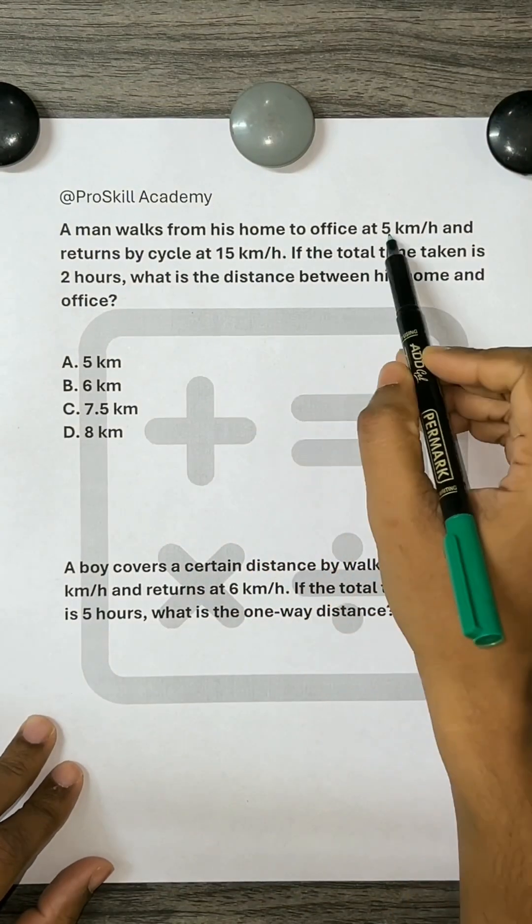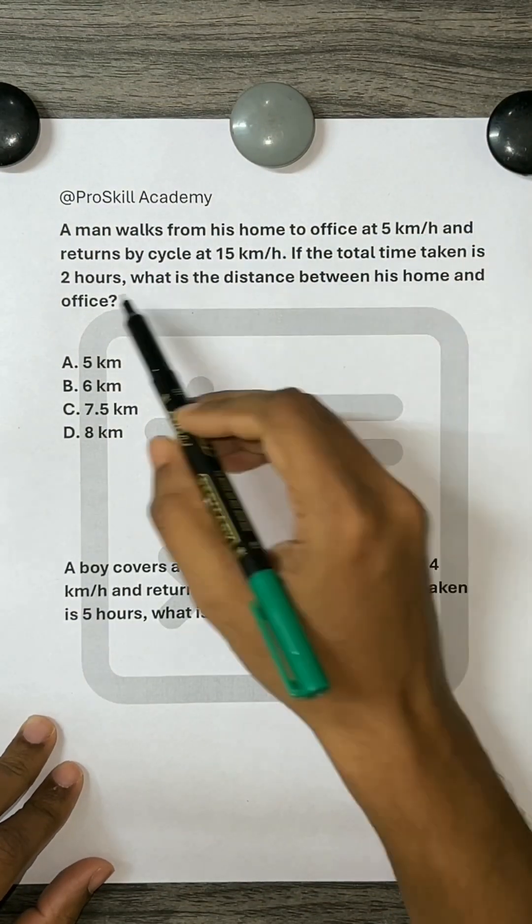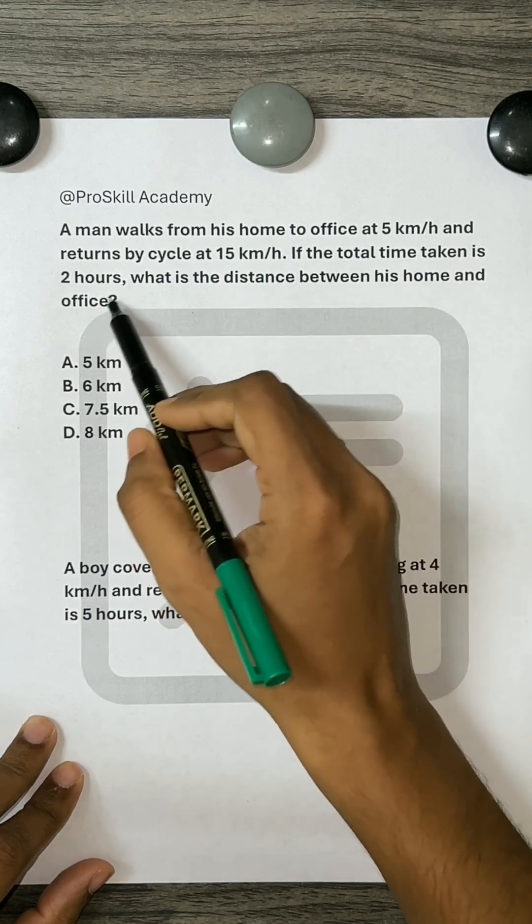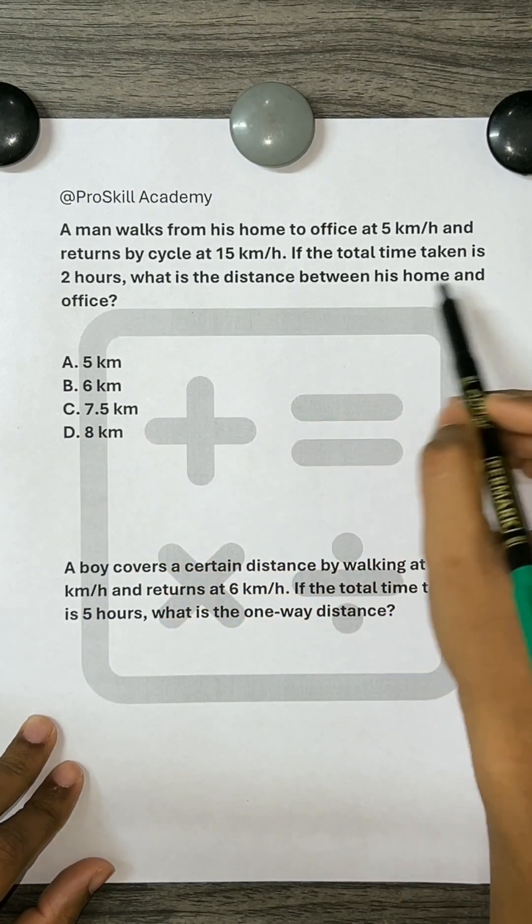A man walks from his home to office at 5 km per hour and returns by cycle at 15 km per hour. If the total time taken is 2 hours, what is the distance between his home and office?